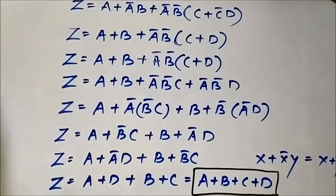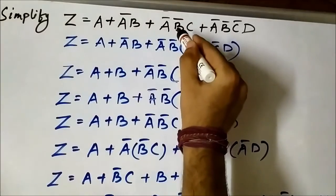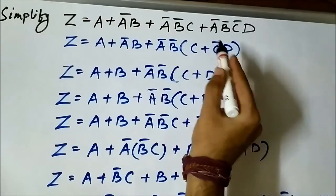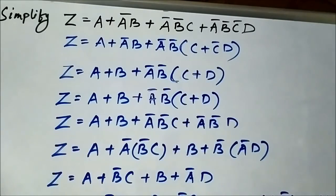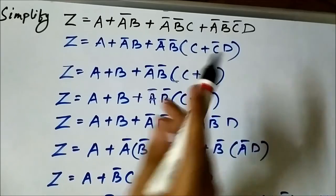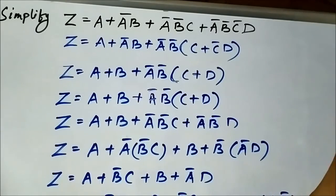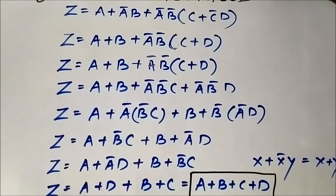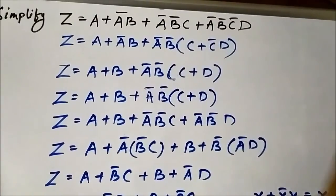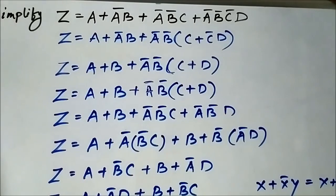The trick here is to first identify the common terms, then simplify using the rules of boolean algebra. Keep identifying common terms and arrange expressions in a suitable way to apply the rules. The key is to be completely clear about the rules of boolean algebra and aware of where common terms appear.